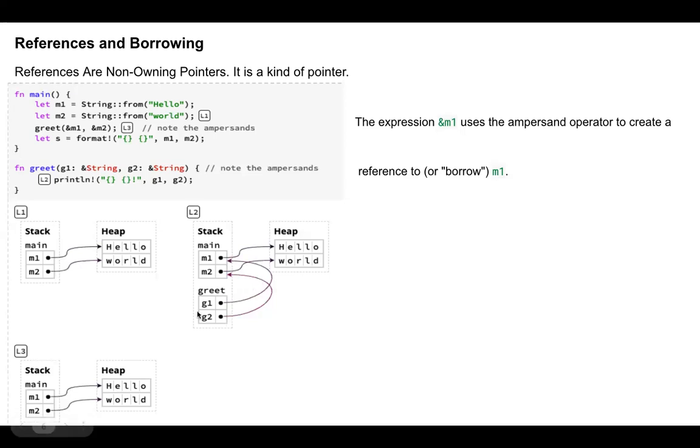Why? Because g1 and g2 are no longer in this code. Important takeaway from here is how to get a reference to a variable. If you do not want to duplicate, how do you get a reference to a variable? So ampersand sign is used to get a reference to a variable. So when it is passed, neither hello world is passed nor m1 and m2 is passed, but a pointer to m1 or a reference to m1 and m2 is passed. So the expression ampersand m1, it is used to create a reference to m1.